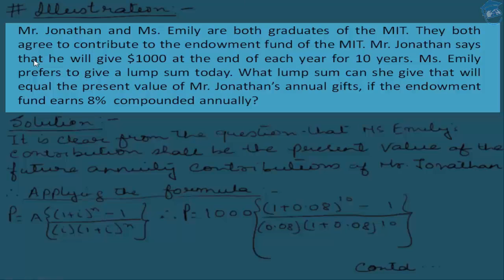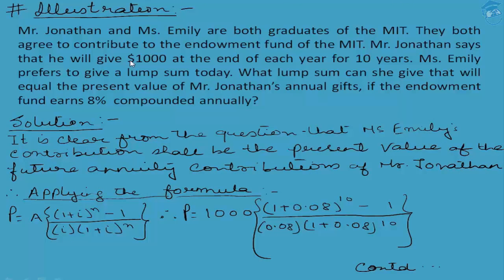Mr. Jonathan says that he will give $1,000 USD at the end of each year for 10 years. Ms. Emily prefers to give a lump sum today. What lump sum can she give that will equal the present value of Mr. Jonathan's annual gifts, if the endowment fund earns 8% compounded annually? So we have to calculate the present value of Mr. Jonathan's contribution stretched over 10 years at 8% required rate of return. Once we calculate that present value, we can prescribe the same lump sum amount to Ms. Emily, which she should deposit to the MIT fund today.